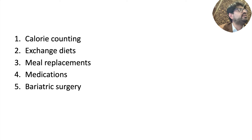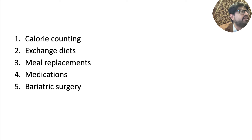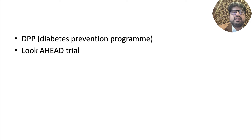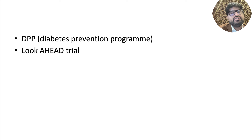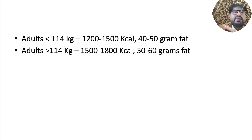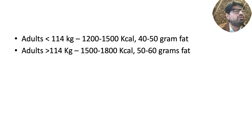A lot of patients say they are not obese, but Indian patients typically have a lot of visceral fat. This is the concept of thin fat Indians. If they lose this visceral fat, even if they look visibly thin, their diabetes tends to improve significantly. Trials like DPP and Look AHEAD looked at various weight loss strategies in diabetes patients. As a broad principle, for patients close to 100 kgs, start with 1,200 to 1,600 kilocalories, and for those above 114 kgs, 1,500 to 1,800 kilocalories.